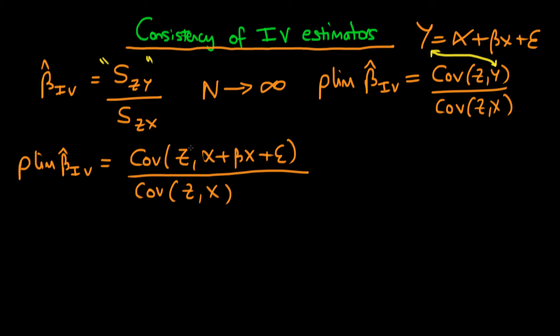So this numerator term here is in principle built up from three separate terms. The first is to do with the covariance of Z with alpha, which, because alpha is a constant, is equal to zero. And then the second term is just the covariance of Z with X times beta divided by the covariance of Z with X. So we just get a beta for the second term.